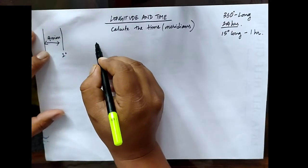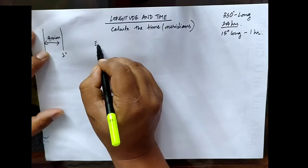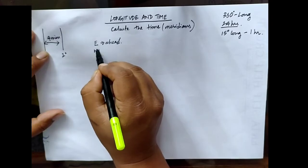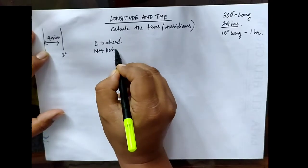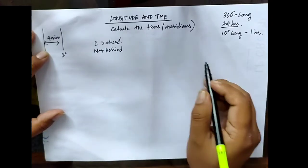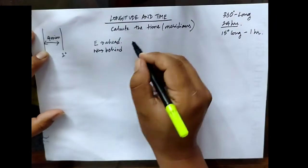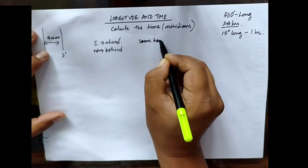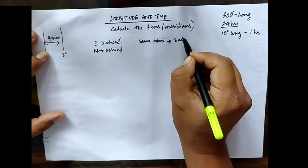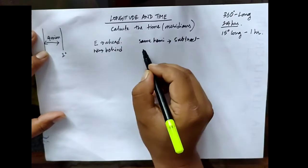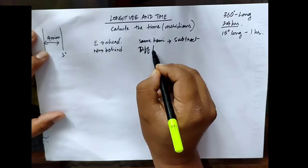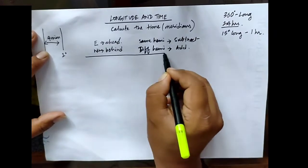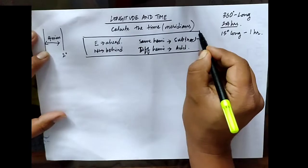A few points to remember: if we are finding the time of the east, it will always be ahead, and if we are finding the time of the west, it will always be behind. If the longitudes are of the same hemisphere, we have to subtract, and if the longitudes are of different hemispheres, we have to add.